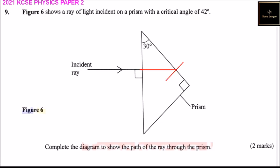And this ray will be refracted like that. So that ray will be reflected, not refracted, like that. So we have the refracted ray on the other side of the prism.